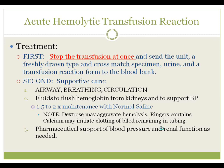Then supportive therapy: airway, breathing, circulation measures, and fluids to flush the hemoglobin from the kidneys and to support blood pressure. Usually this is done at one and a half to two times maintenance with normal saline. It's important to avoid Ringer's lactate because of the calcium, which may cause inappropriate clotting of the remaining blood in the tubing. It's also important to avoid dextrose-based solutions such as D5 in water or D5 in a quarter, as the dextrose may affect hemolysis as well. Patients may need pharmaceutical support of blood pressure and renal function, so it's always best to get the PICU notified, even if the patient is stable, simply so they know what's going on in case things deteriorate later on.